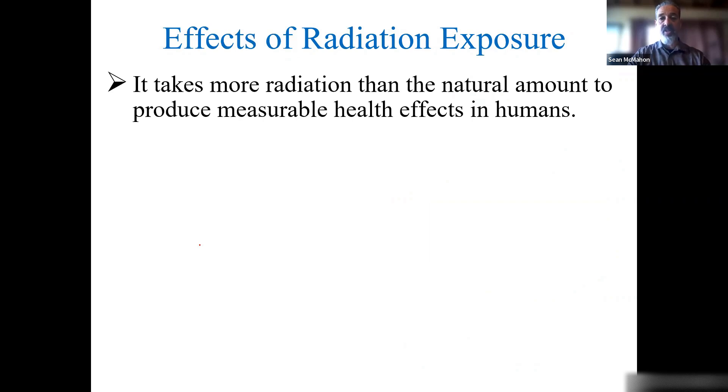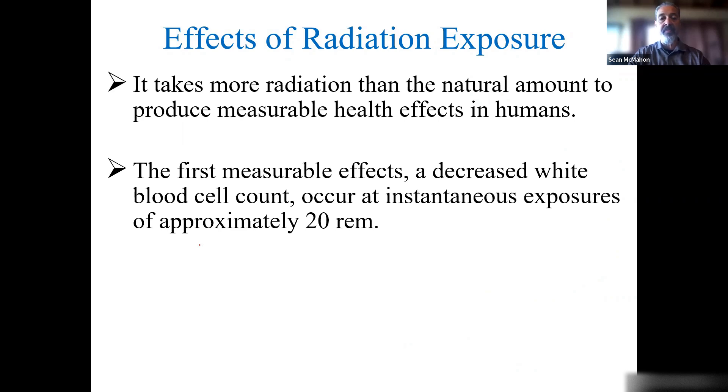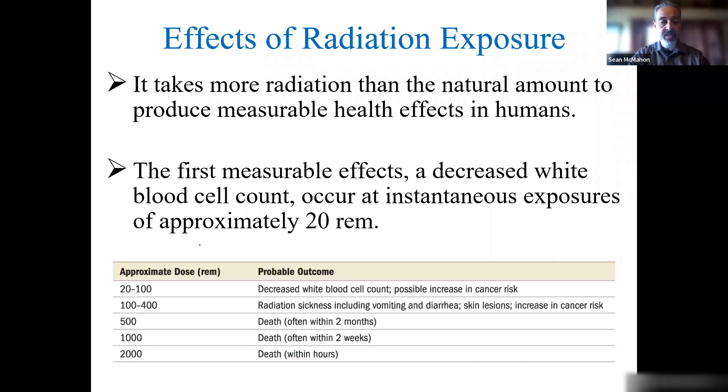It takes more radiation than the natural amount to produce a measurable health risk in humans. The first measurable effect is a decrease in white blood cell count, which would decrease your immune system's ability to fight off infections. This occurs at instantaneous exposures of about 20 REMs. Here we see what type of doses in REMs would cause some effect on organisms: 20 to 100 is decreasing white blood cells and can increase cancer risk. At 140, we see sickness such as vomiting and increased cancer risk. Beyond that, we see lethal dosages. But again, this is from extreme cases.